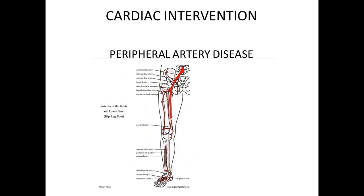Now we come to the lower extremity. The aorta is divided by the diaphragm into thoracic and abdominal portions. The abdominal aorta comes straight down and divides in its lowermost course to give you the common iliac arteries. So the abdominal aorta gives rise to the iliac arteries — you have your common iliac artery.